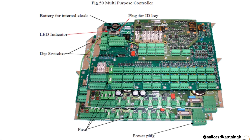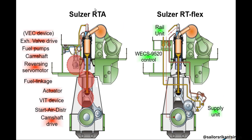The left-hand side is your conventional or old design of Sulzer engines, and this is the latest one — the Wärtsilä Sulzer Flex engine. 'Flex' basically refers to the electronic engine. You can see on the left-hand side all the red-colored components — these are the components which are not present on the new electronic engine side, so these components are removed.